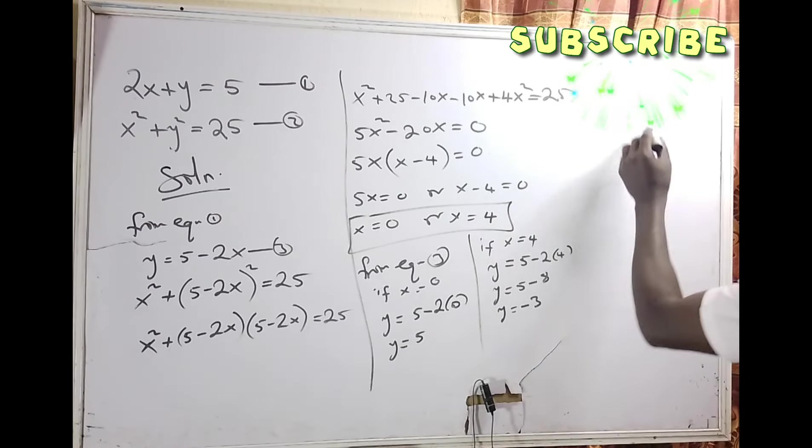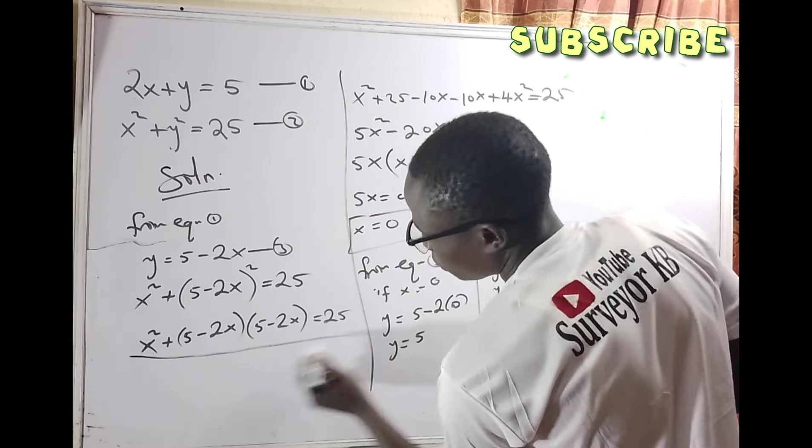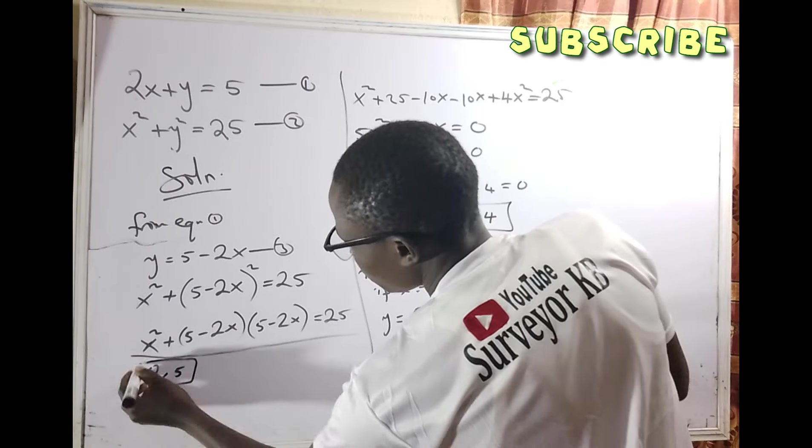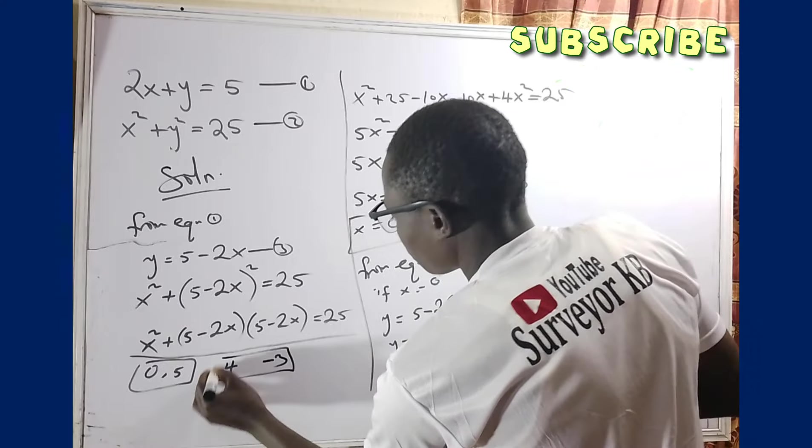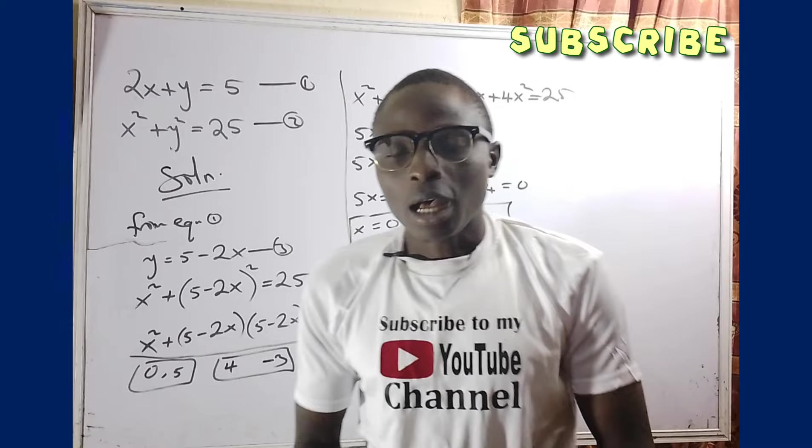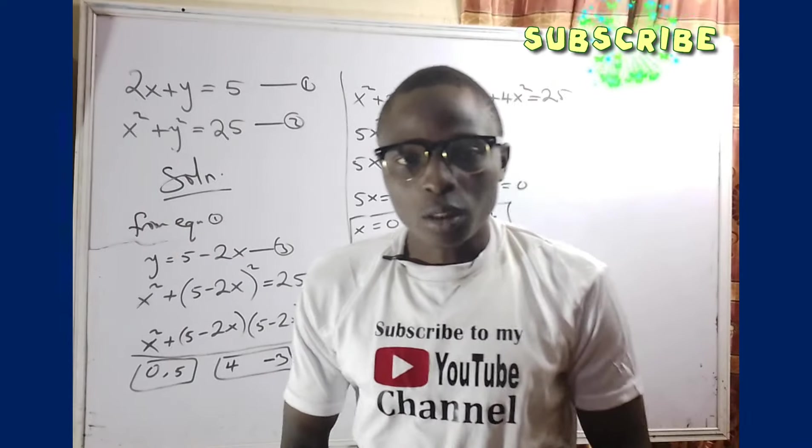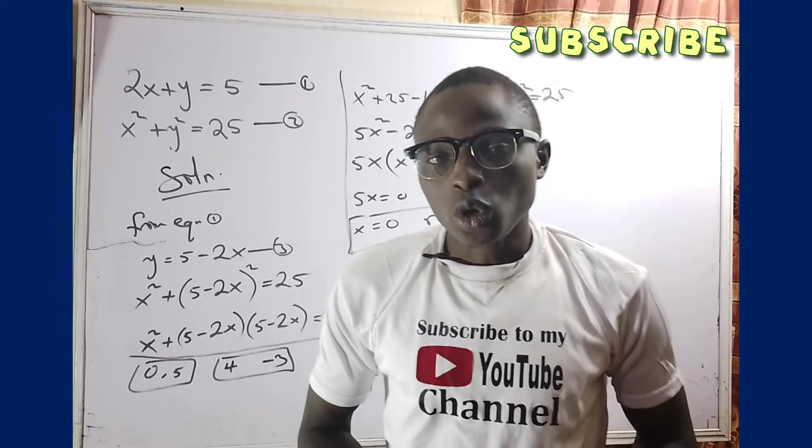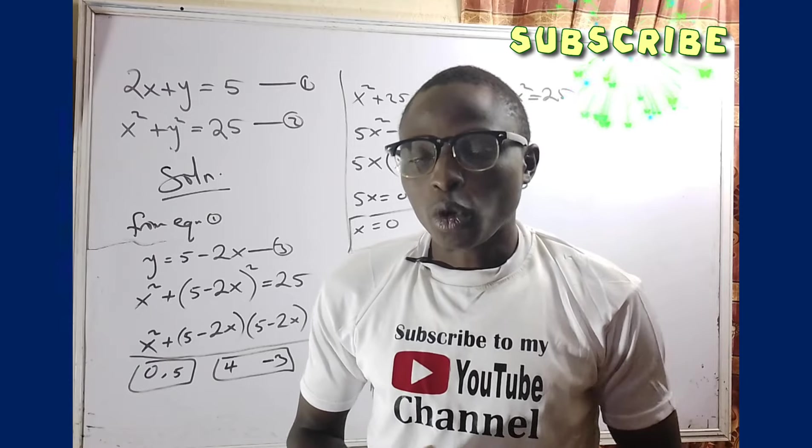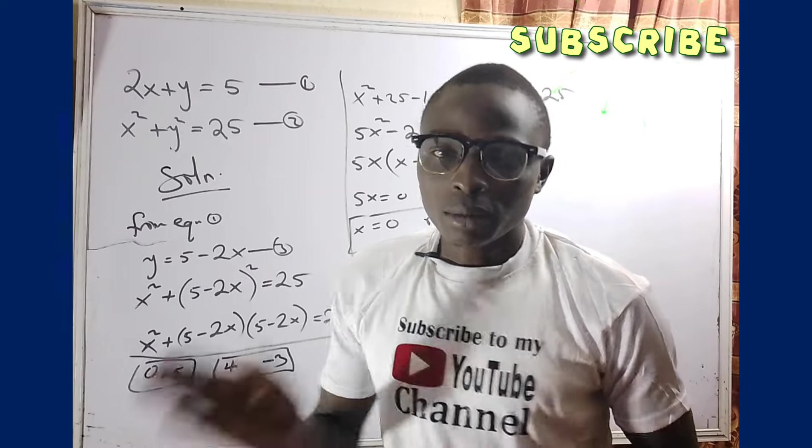The possible values are (x,y) equals (0,5) or (4,-3). These are the values of x and y that will satisfy this particular simultaneous equation. If you find my video useful or helpful, don't hesitate to subscribe. We upload videos almost every day. Thank you so much for watching, bye.